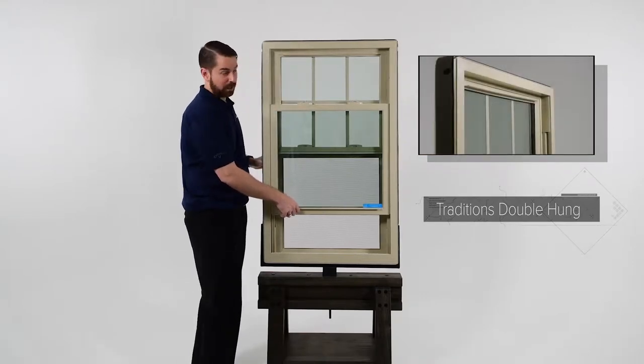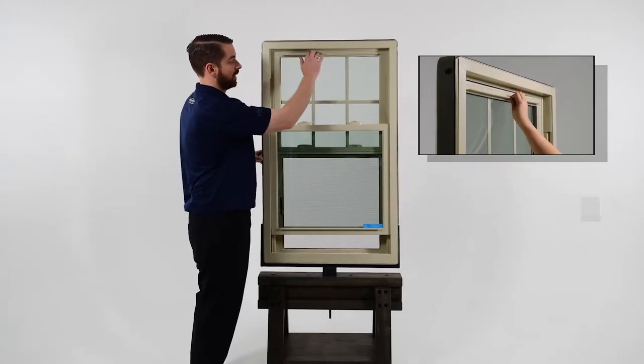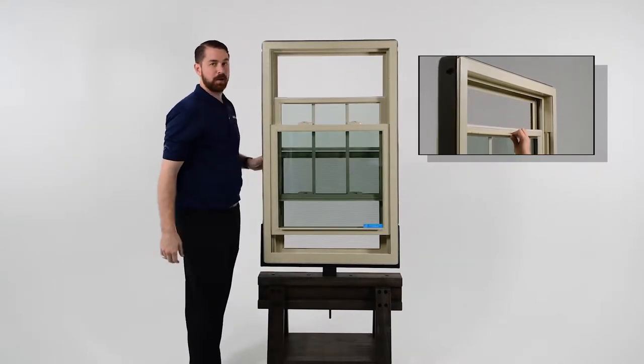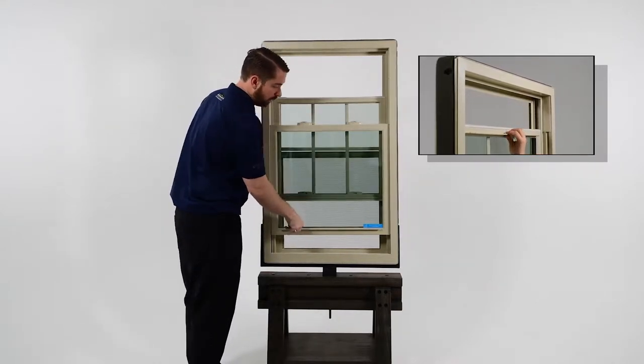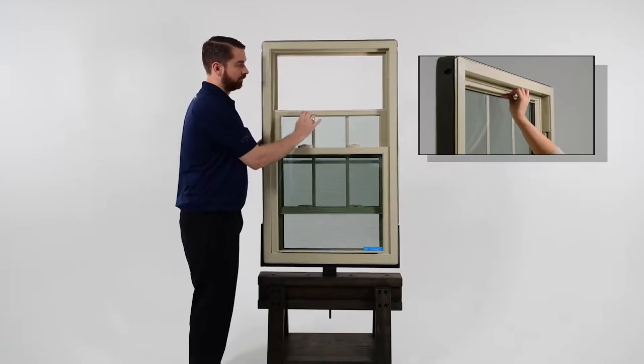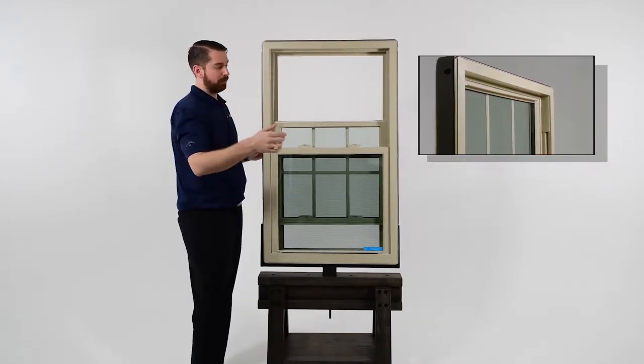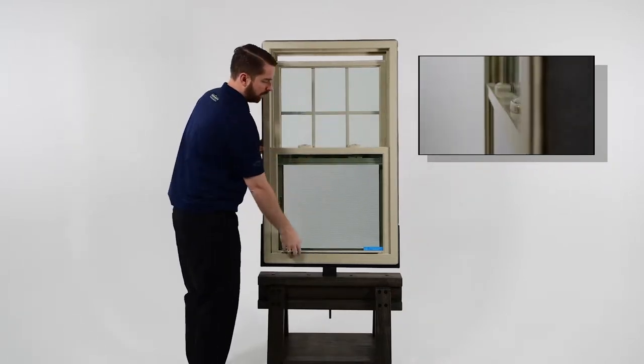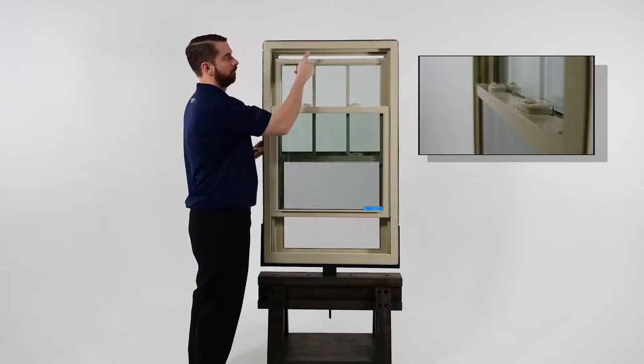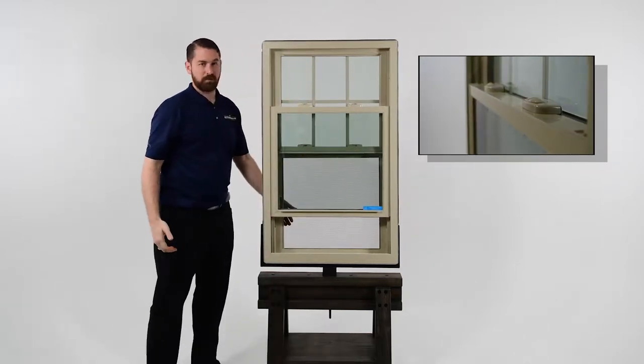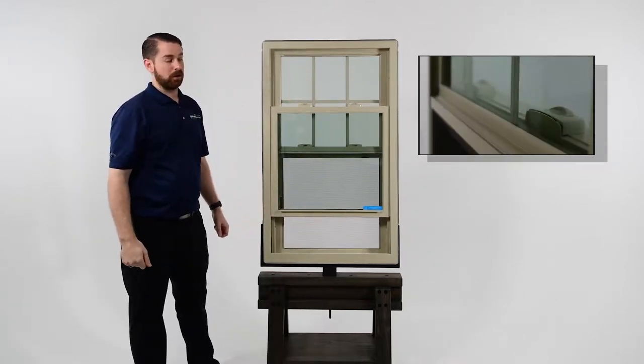But one of the differentiators is that the top sash can also be operated. So you can leave the bottom closed and allow ventilation through the top, or you can raise the bottom and allow ventilation through the bottom just like a single hung window.